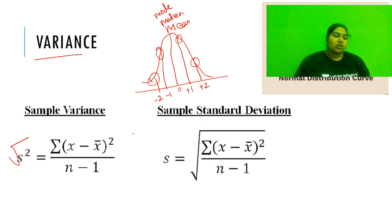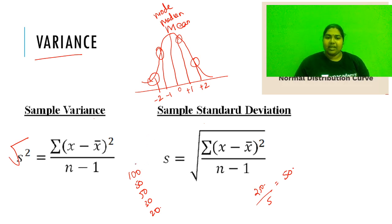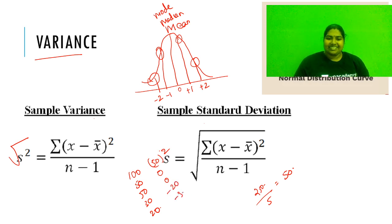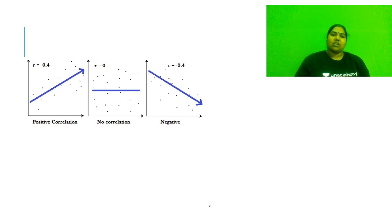To calculate variance, for example with five samples: 100, 50, 50, 30, 20. First calculate the mean: 250 divided by 5 equals 50. Then calculate x minus x-bar for each value, square it, sum them using sigma, and divide by n (or n minus 1). That is how you calculate variance.